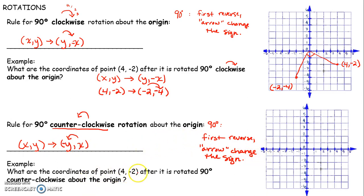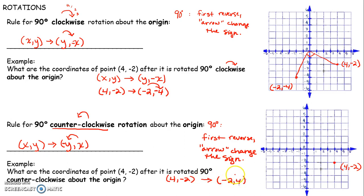What are the coordinates of (4, -2) after it's rotated 90 degrees counterclockwise about the origin? Going counterclockwise, I know it's going to end up in quadrant 1. I take (4, -2), first reverse: -2, 4. Then put my arrow counterclockwise, change the sign. So it becomes (2, 4). That will be the image.